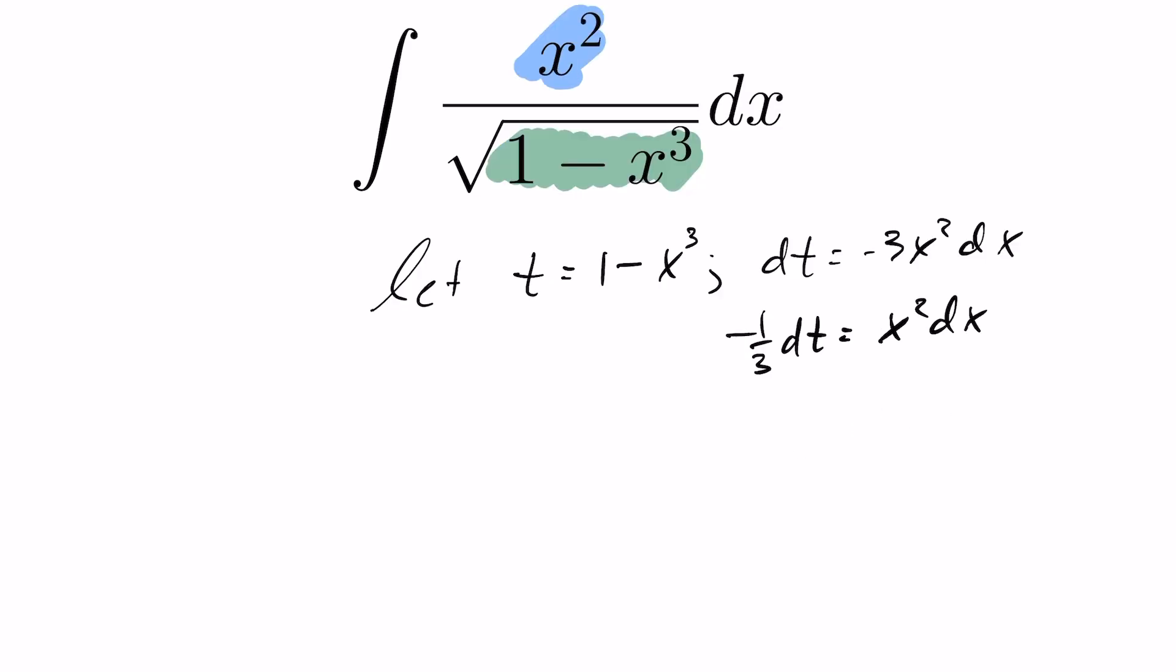So now I can go ahead and do my substitution. I'm going to replace the x squared dx with minus 1 third dt, and then I'm going to replace the 1 minus x cubed with t. So this will be root of t on the bottom. Clean this up, this becomes minus 1 third, the integral of dt over root t.